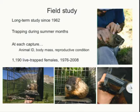The data for this analysis comes from one of the longest-term mammalian studies. Professor Ken Armitage from Kansas started studying the species in 1962 — I think it's only second to Jane Goodall's chimpanzees. Every single individual has been followed in quite detailed, including all behavior, population dynamics, and everything. Trapping takes place during the summer months since the field site is inaccessible during winter. At each capture, we collected animal ID, body mass, and reproductive condition. For the analysis, I have about 1,200 individuals captured between 1976 and 2008.